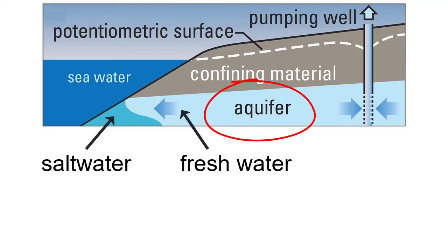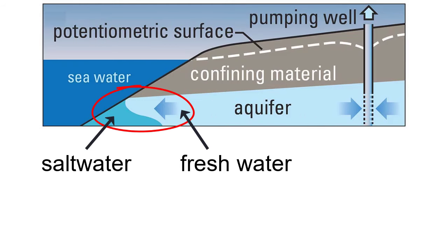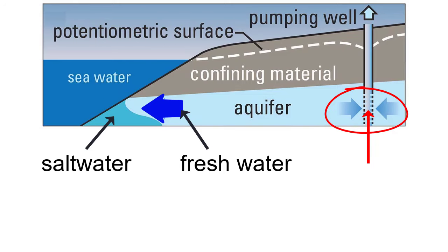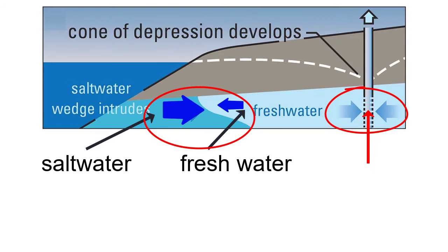Some aquifers exist in ground very close to the ocean. In such cases, the aquifers might have salt water at depth and fresh water sitting atop. The more fresh water that exists in these aquifers, the more pressure on the underlying salt water, which keeps it from intruding too much and mixing with the fresh water and ruining the fresh water supply. If the fresh water in this aquifer is over-pumped, the pressure on the salt water portion will be reduced and that can cause the salt water to intrude further into the aquifer.